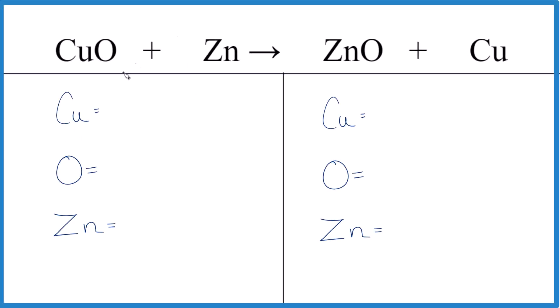So let's balance this equation. We have CuO plus Zn, we get ZnO plus Cu. So we'll balance it, then we'll talk a little bit about redox at the end.